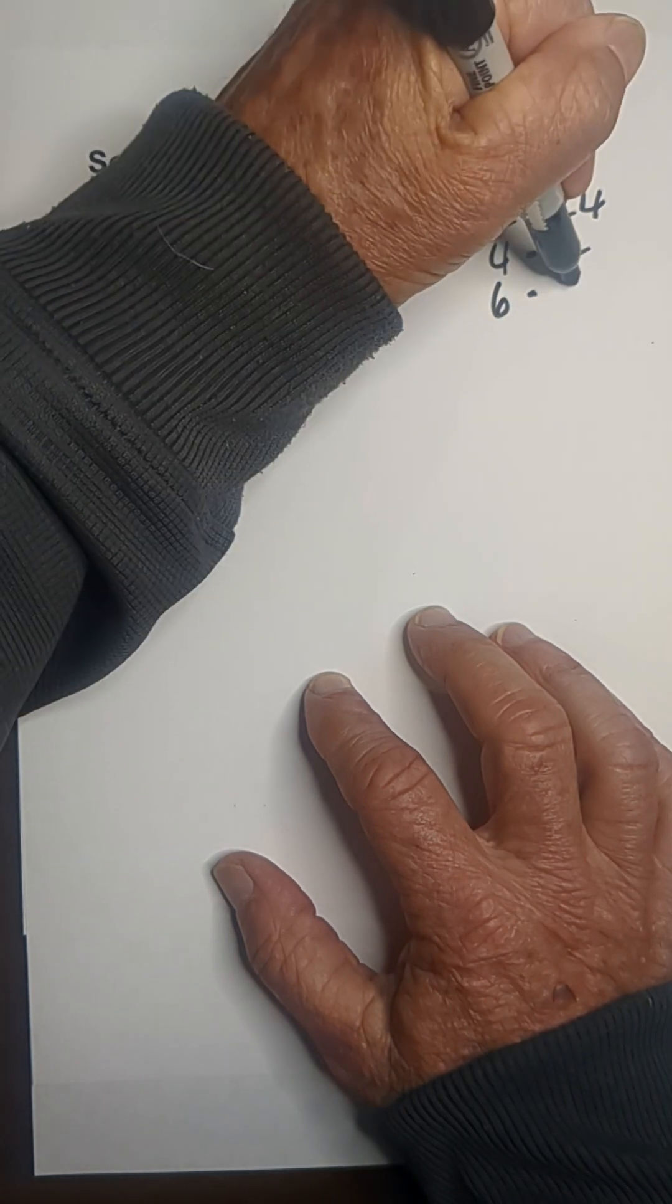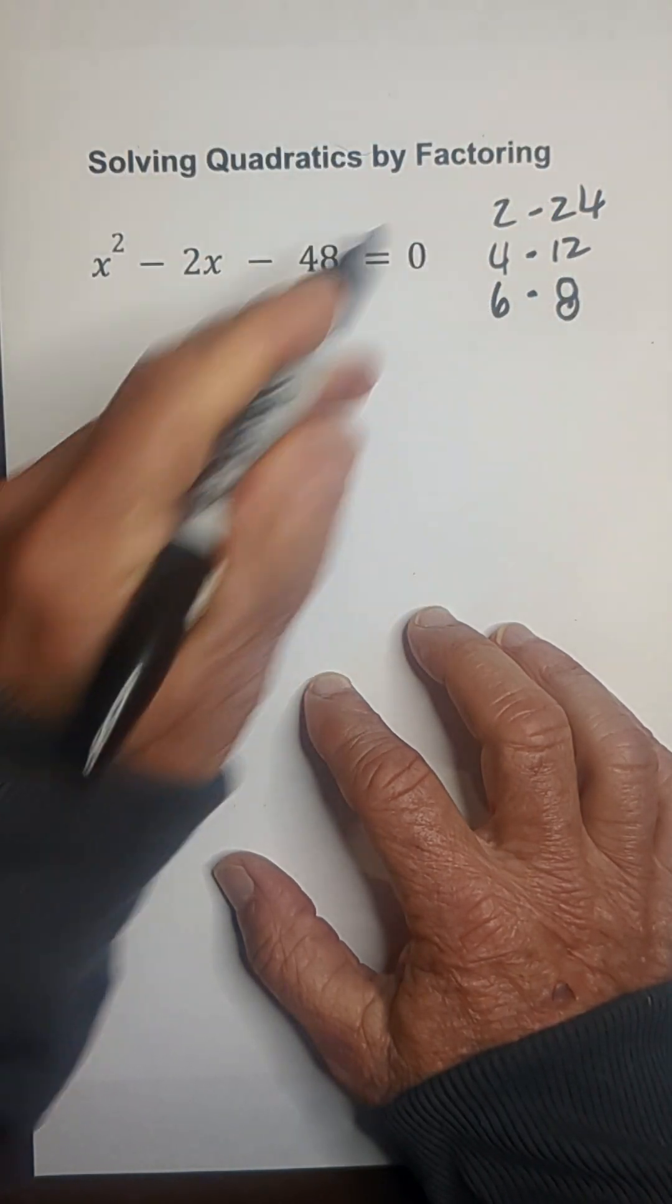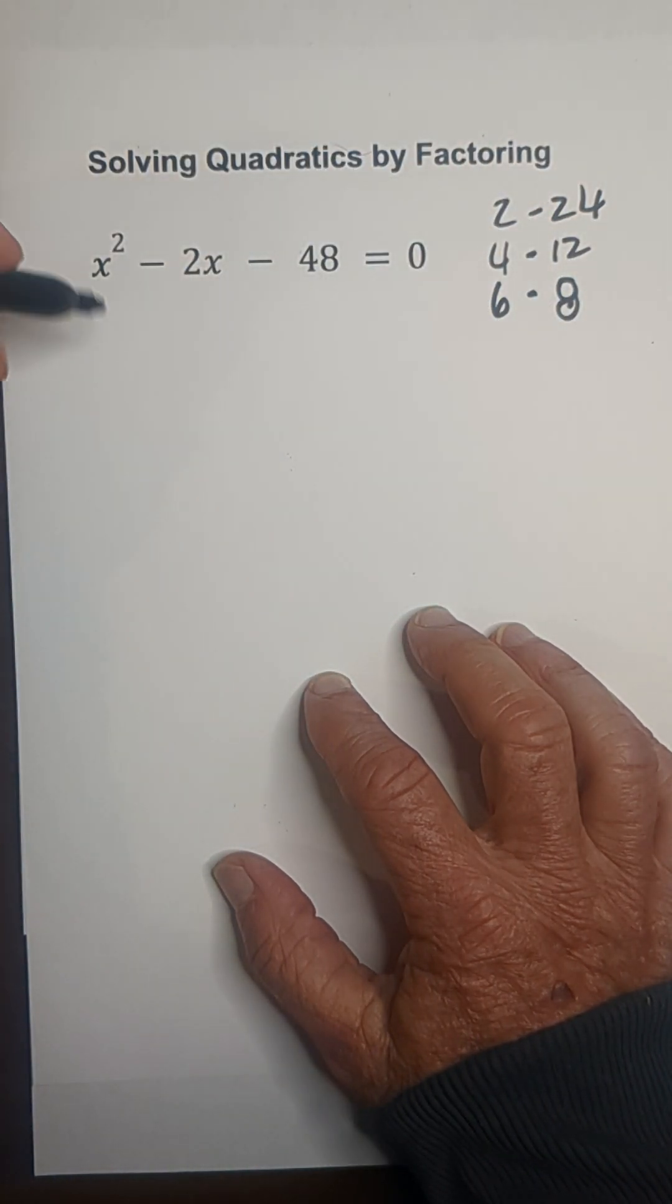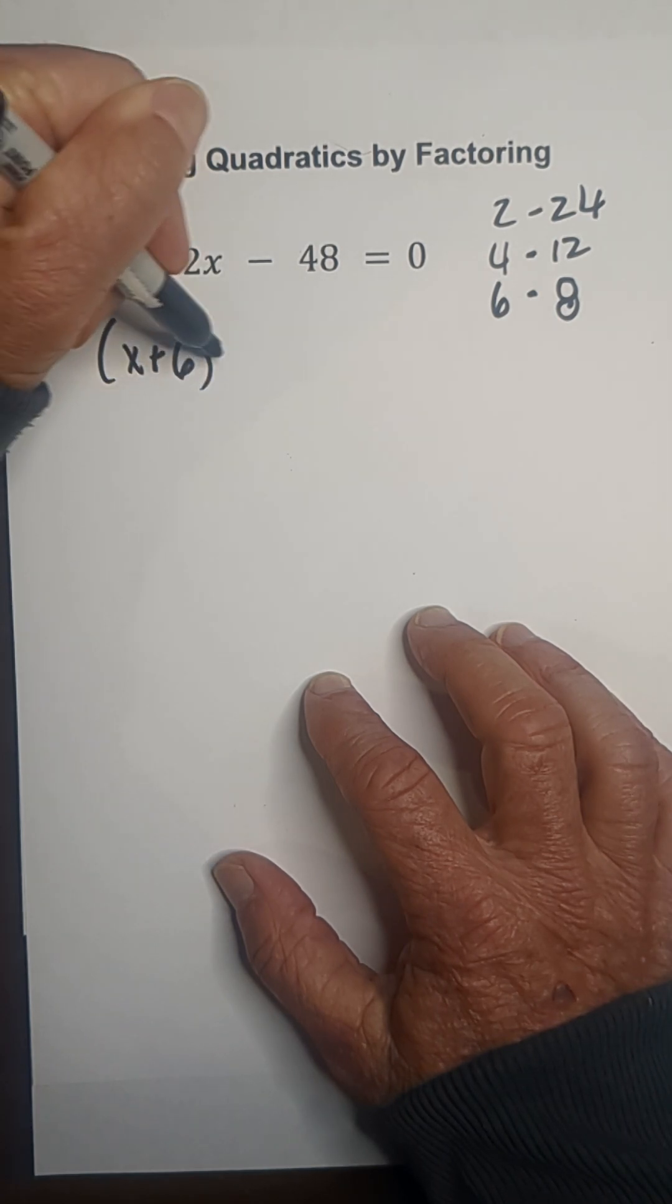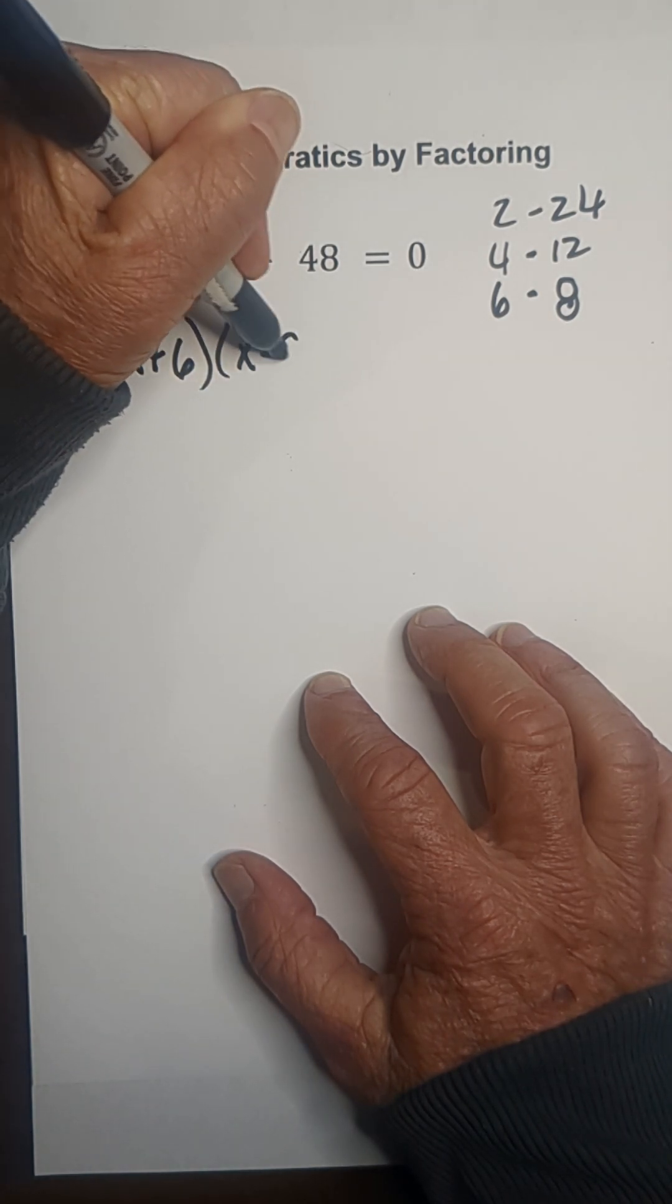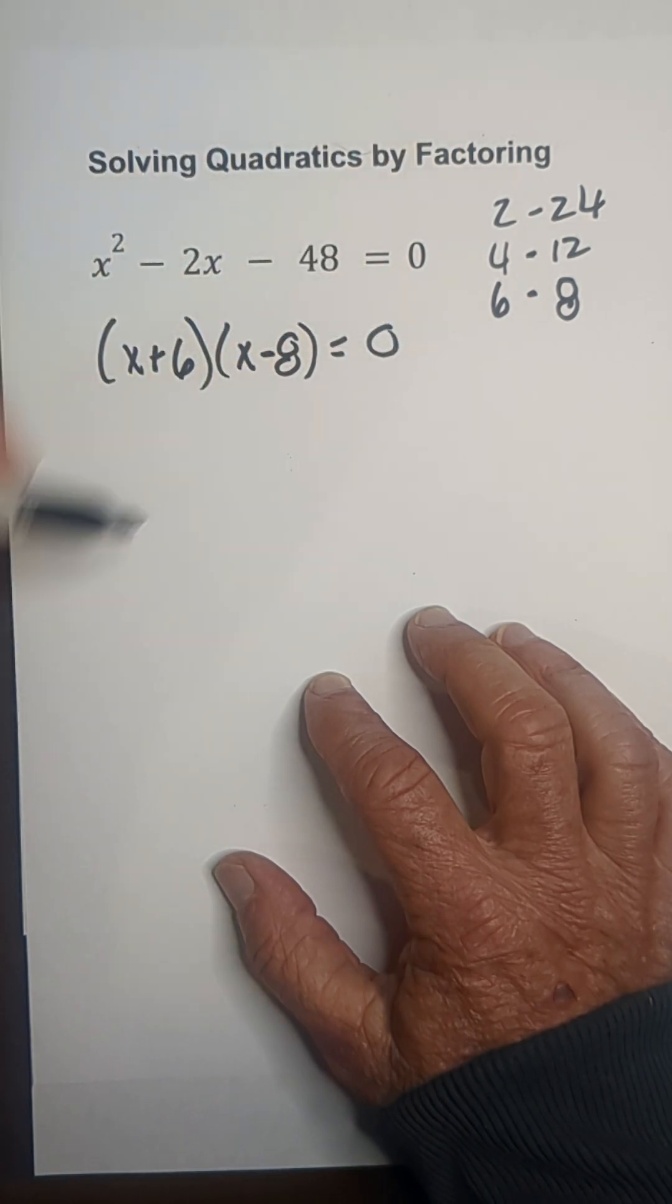How about 6 and negative 8? Negative 8 and a positive 6 is negative 2. I'm then going to rewrite this as x plus 6 and x minus 8 and set it to 0.